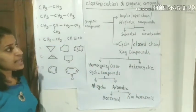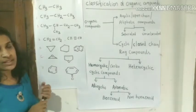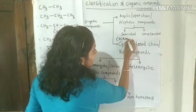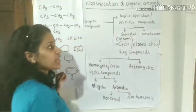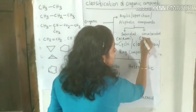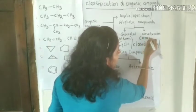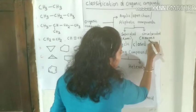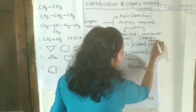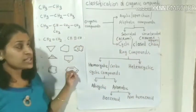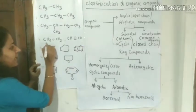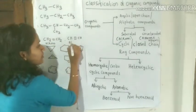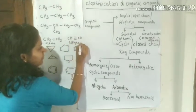Saturated hydrocarbons are organic compounds called alkanes. Unsaturated hydrocarbons are organic compounds of two types: alkenes and alkynes. Alkenes contain double bonds, while alkynes contain triple bonds.